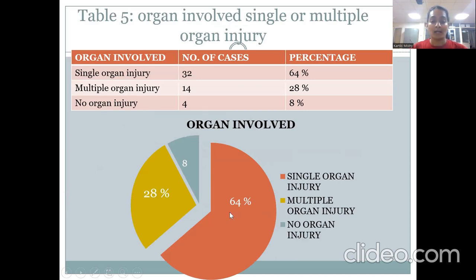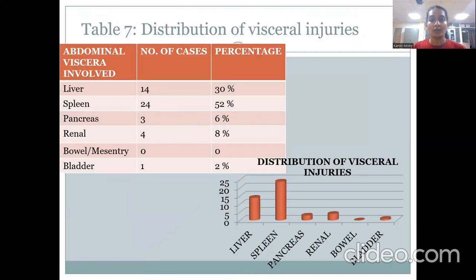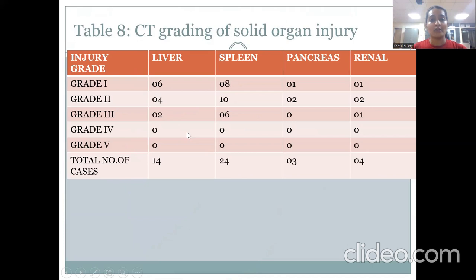The pie chart showing organ involvement indicates that single organ involvement was maximum at 64%, multiple organ injury was 28%, and no organ injury was 8%. Distribution with hemoperitoneum: visceral injuries with hemoperitoneum were 34%, without hemoperitoneum were 3%, and isolated hemoperitoneum without any visceral injury was 9%. The most common visceral injury was to the spleen at 24%, followed by liver at 14%, and then renal injuries. CT grading of solid organs was performed on a grade 1 to 5 scale based on the American Association for the Surgery of Trauma.